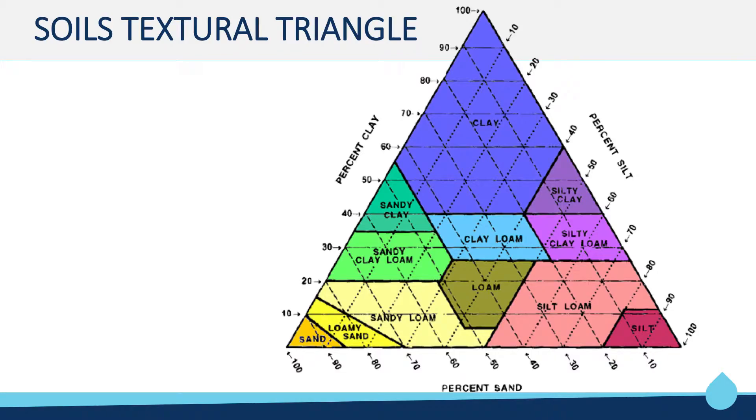When looking at the soil textural triangle, you will note that the percent clay is listed along the left-hand side of the triangle. Percent silt is listed along the right-hand side of the triangle. And percent sand is listed along the bottom of the triangle.